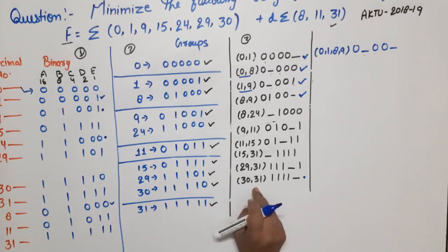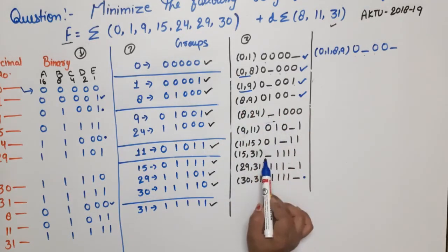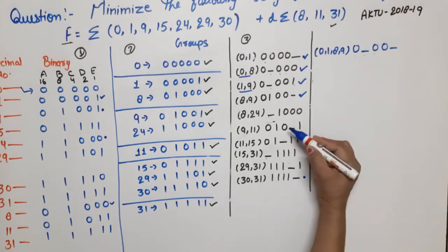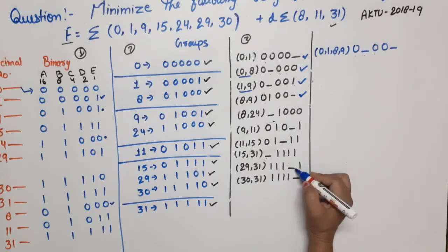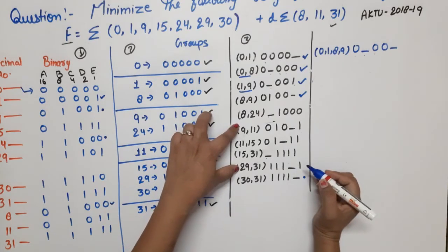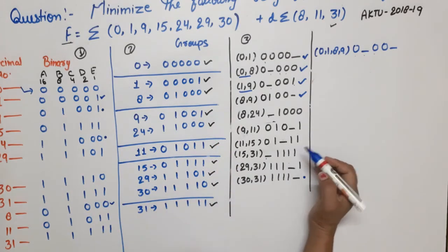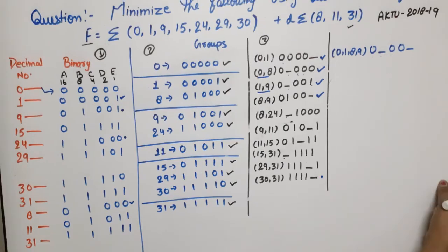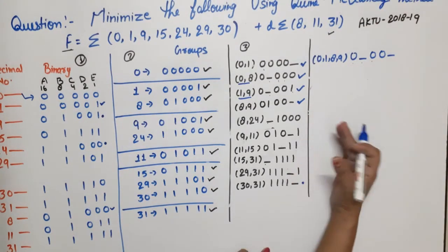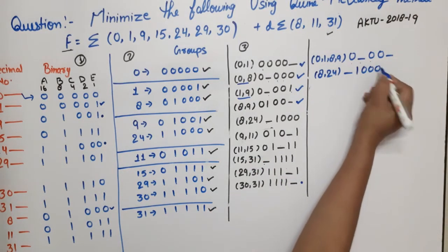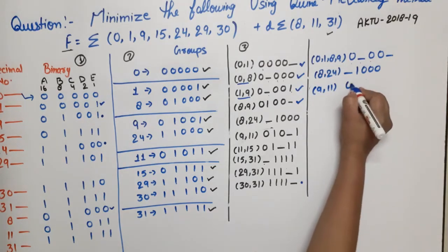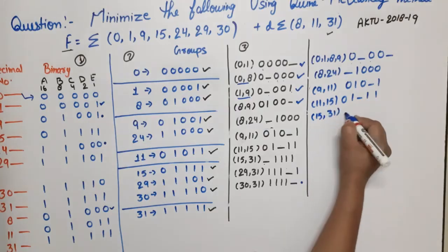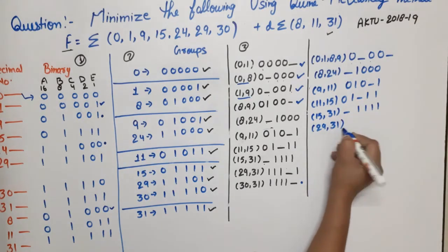Checking further: (8,24) with (9,11) — difference 15 minus 8 is 7, not possible. Comparing (9,11) with (29,31): 29 minus 9 is 20, not a power of 2, not possible. No further combinations are possible. The remaining prime implicants from unreduced pairs are: 8,24 → -1000; 9,11 → 010-1; 11,15 → 01-11; 15,31 → -1111; 29,31 → 111-1; 30,31 → 1111-.